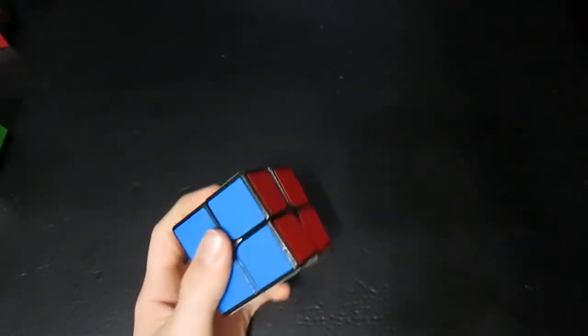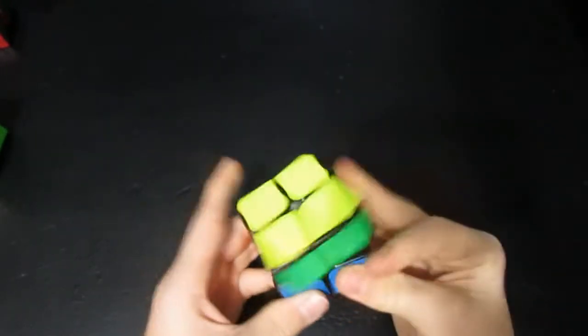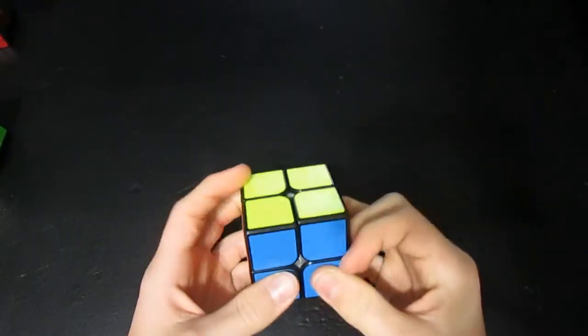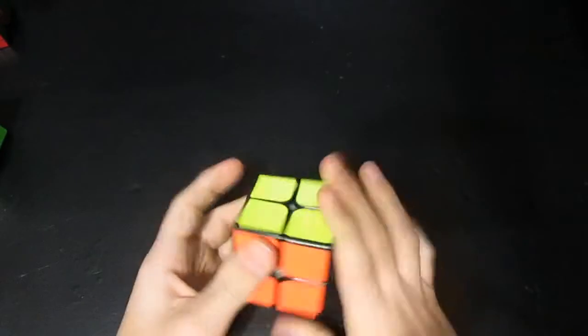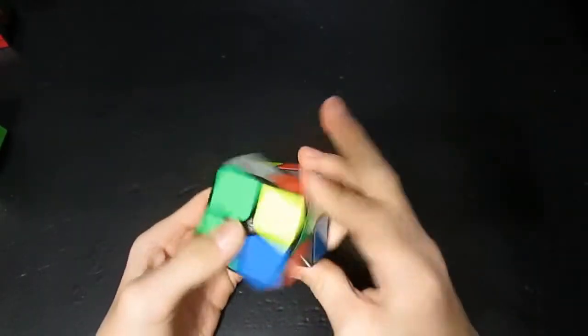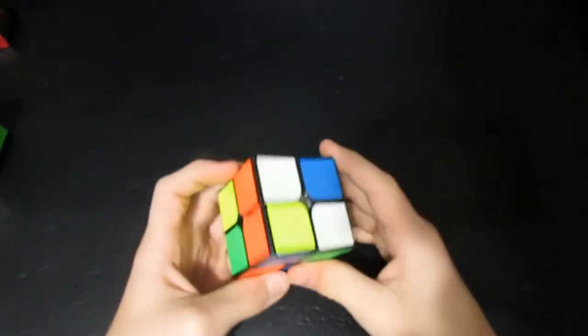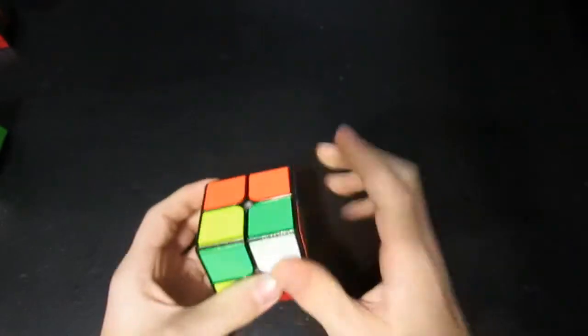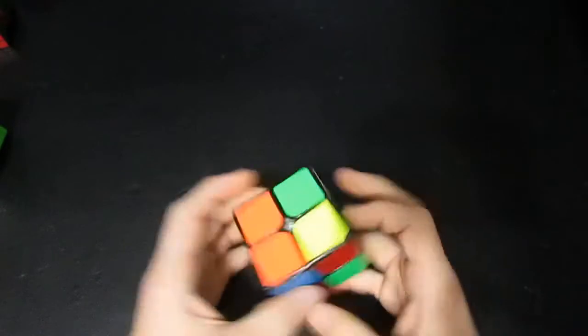So, the method that you're going to learn is called Old Pochmann. This is only half of all the Pochmann that you're going to learn. The other half is for 3x3, for edge permutation. So, let's go ahead and scramble it up. Okay, so the scramble was just up on the board, and let's get started.